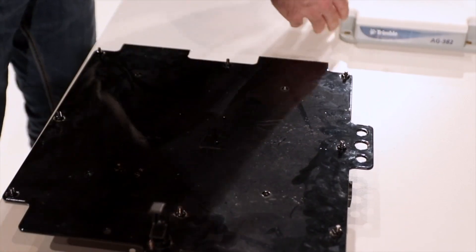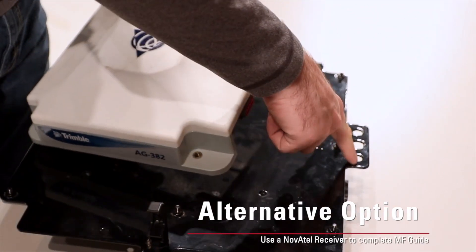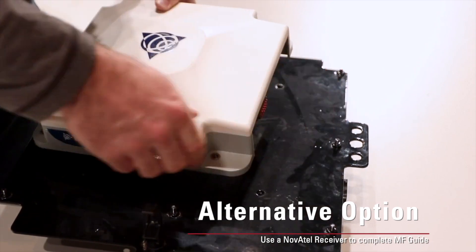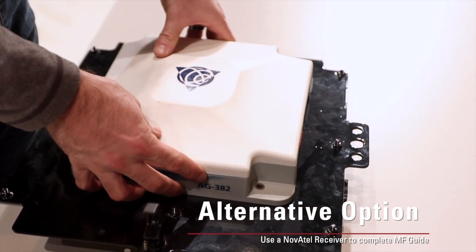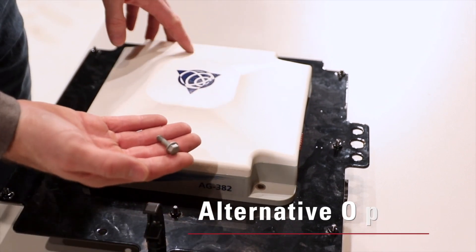In this situation, we're going to take the Trimble Ag382, position it with the connectors facing back to this part of the bracket, and position it over the four holes that these screws will hold to the bracket.